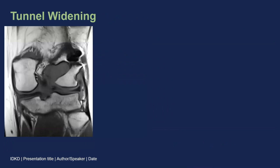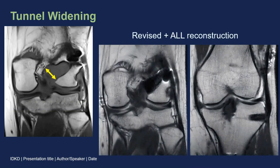You want to make sure you look for tunnel widening and measure it at its maximum diameter perpendicular to the long axis of the tunnel. Widening is not necessarily abnormal and doesn't necessarily mean that the graft has failed, but if the graft has failed, the surgeon wants to know because it will affect the revision procedure. The graft, if the tunnel is wide, may need to be bone grafted in a two-step operation. In this particular case, when the surgeon revised this failed ACL, they used an extra-wide interference screw to fill the femoral tunnel and then supplemented the operation with a reconstruction of the anterolateral ligament.